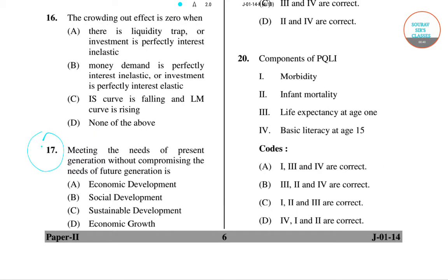Question number 17: 'Meeting the needs of the present generation without compromising the needs of future generations is known as...' Out of the four options given, the right answer is sustainable development.